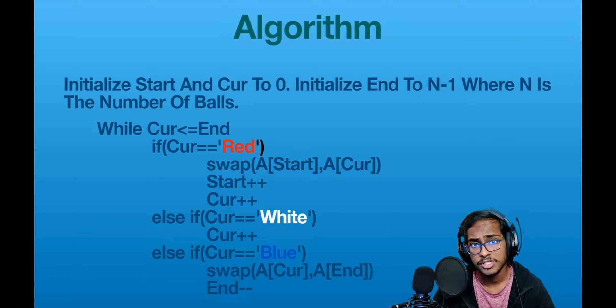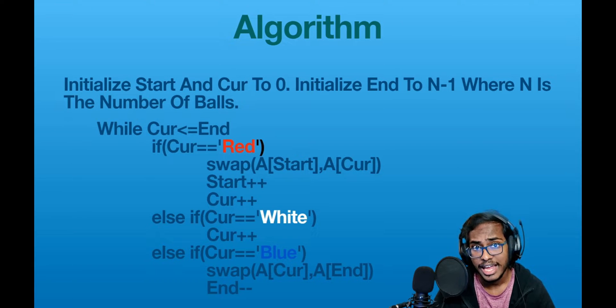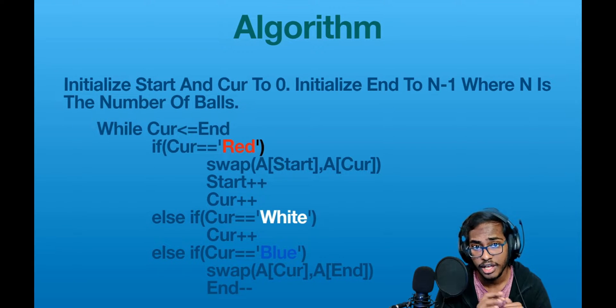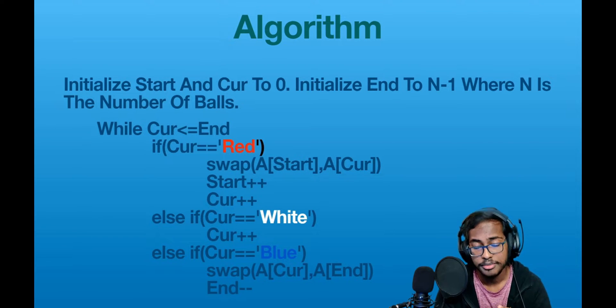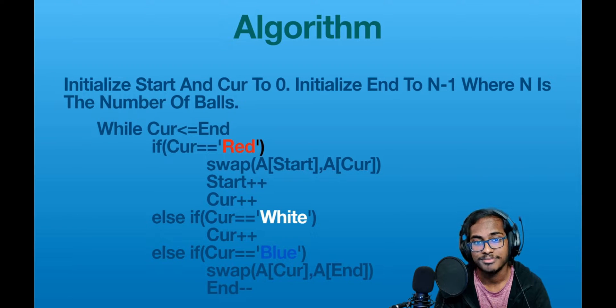When the cut pointer becomes greater than the end pointer, that is the terminating condition for our algorithm. Our array is now sorted in the required order — reds followed by whites followed by blues.